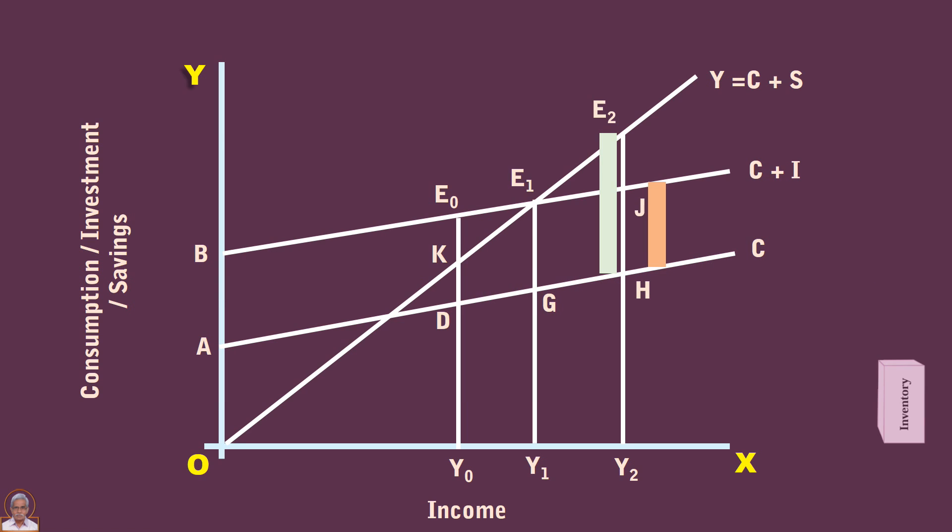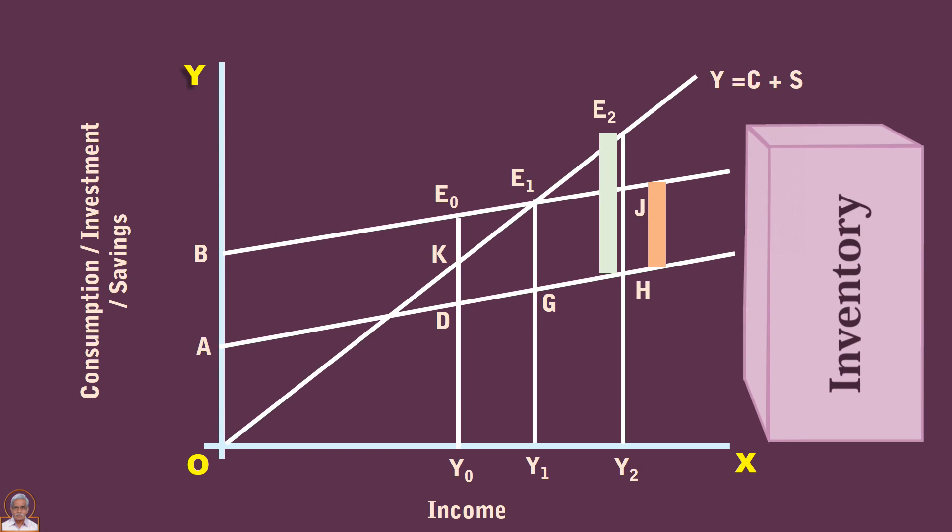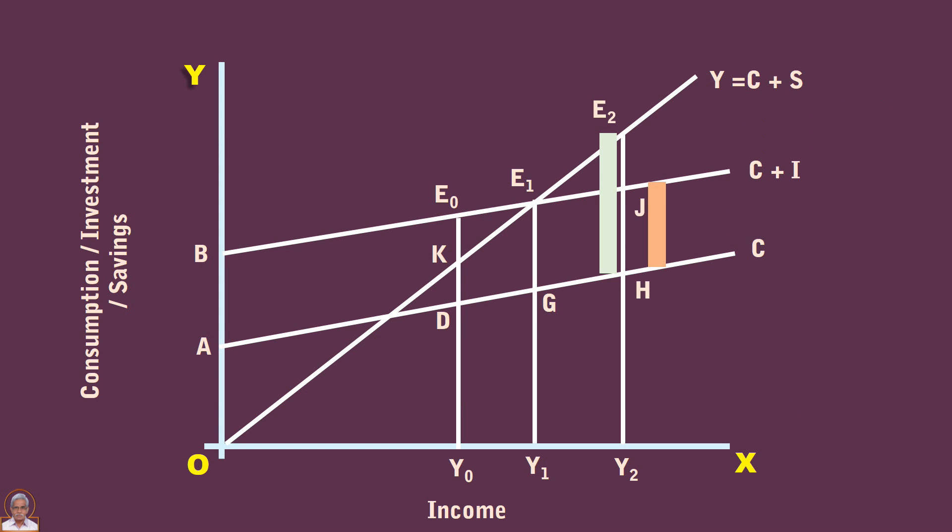This unsold part of output is accumulated by businessmen in the form of unintended inventories. In order to avoid further accumulation of unwanted inventories, they will reduce investment.